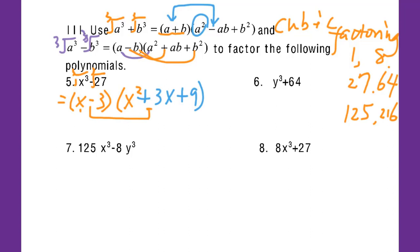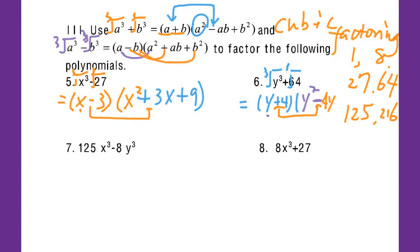Let's go to number six. I take the cubic root of both and get (y plus 4). Focus on y and 4: the first term is y squared, then subtraction because it's the opposite sign, then 4 times y gives 4y, and 4 squared gives 16. That's it.